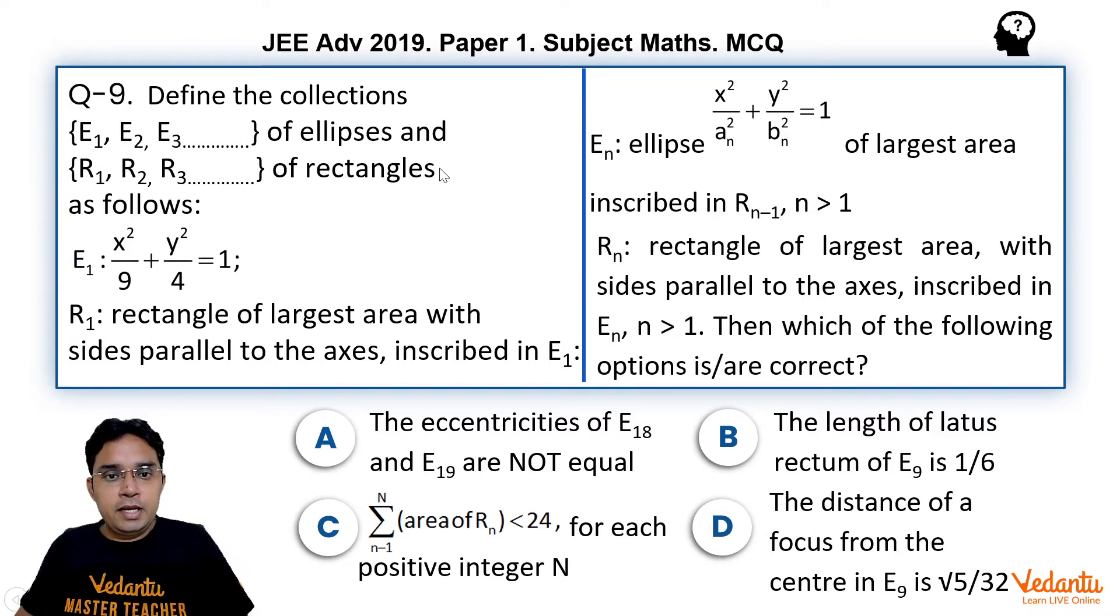Define the collections E1, E2, E3 and so on of ellipses and R1, R2, R3 and so on of rectangles as follows: E1 is x²/9 + y²/4 = 1. R1 is the rectangle of largest area with sides parallel to the axes inscribed inside E1.